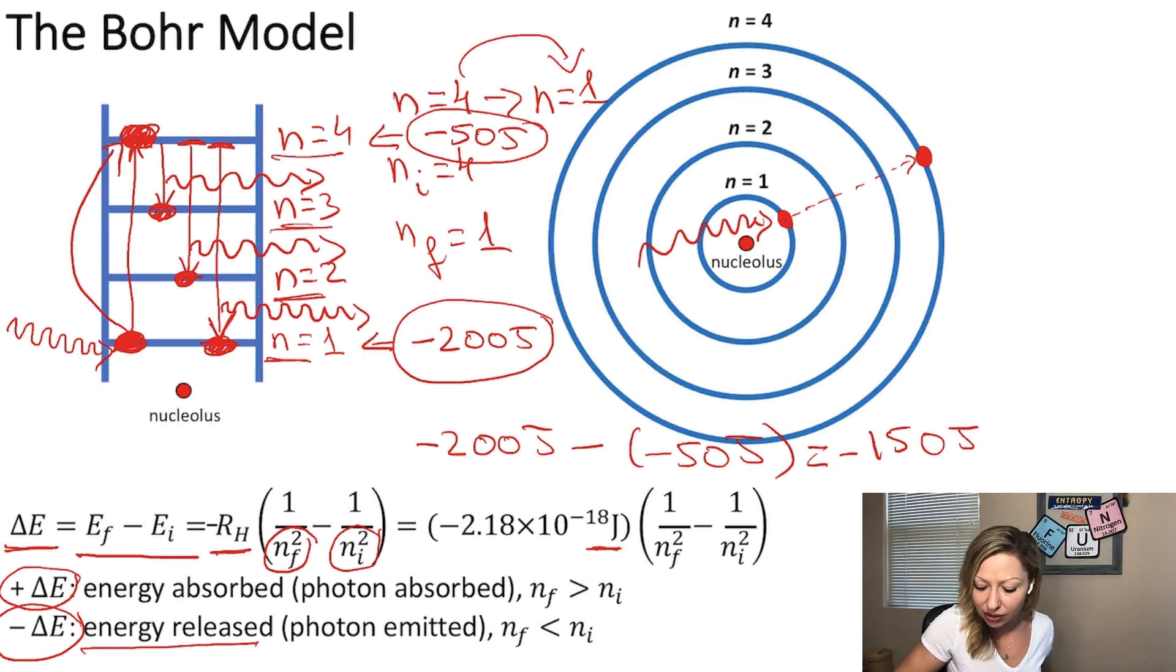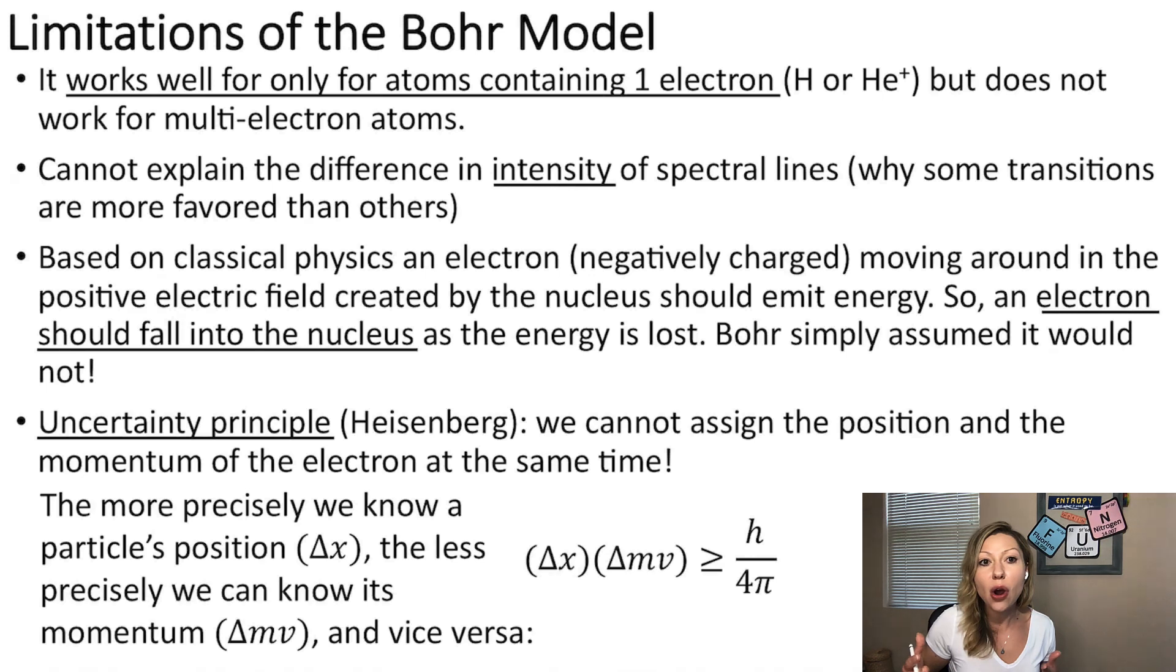Now, let's look at the limitations of the Bohr model. So it works really well for atoms that contain only one electron, just like hydrogen or helium plus, but it doesn't work at all if you have more than one electron.